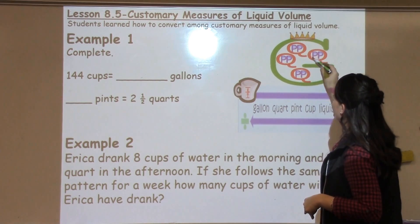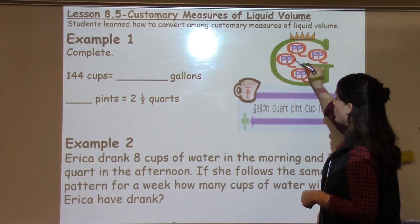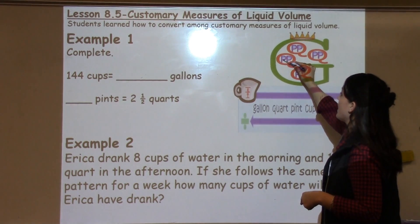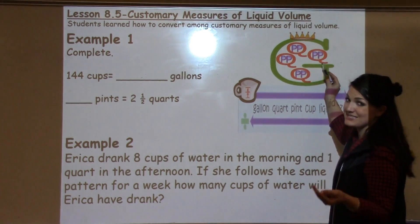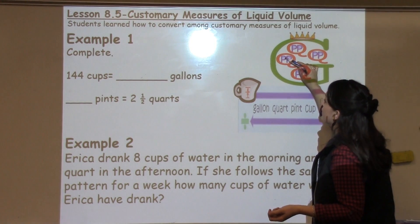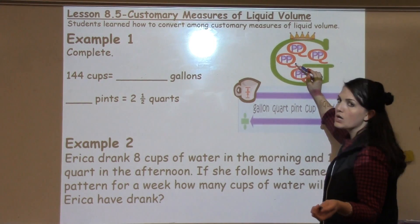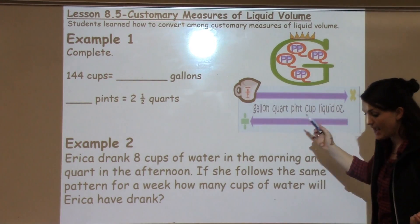So this helps your student know quite a bit of information just by drawing this diagram. It helps them know that there are four quarts in a gallon. There are two pints in one quart, which means that there are two, four, six, eight pints in a gallon. It helps them know that there are two cups in one pint, four cups in two pints, four cups in one quart, and 16 cups in a gallon.